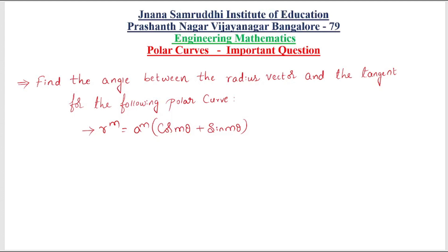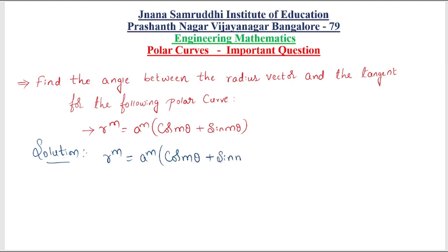Hello all. In this video we will learn the engineering mathematics polar curves important question: find the angle between the radius vector and the tangent for the following polar curve r^m equals a^m into cos mθ plus sin mθ. Solution: we need to write the question that is r^m equals a^m into cos mθ plus sin mθ.